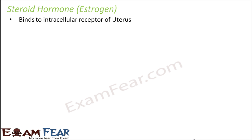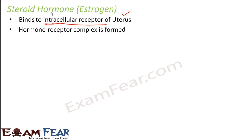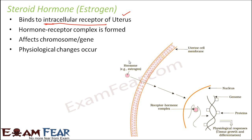Similarly, let us look at another steroid hormone — estrogen. Estrogen is the female hormone produced by the ovaries. One of its target organs would be the uterus. The receptors for estrogen are intracellular receptors, meaning they are present inside the uterus. In this case, the estrogen hormone will enter inside the uterus and then combine with the receptor to form the hormone-receptor complex.